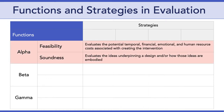The first stage is alpha testing, which takes place early in the DBR process and involves assessment of your design ideas. Typically, it focuses on two functions: feasibility and soundness. Evaluating feasibility means focusing on the potential temporal, financial, emotional, and human costs associated with creating your intervention. Evaluating soundness, on the other hand, has to do with examining the ideas underpinning your design and how those ideas are embodied.